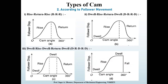In the second case — dwell-rise-return-dwell — there is a rise and return of the follower after dwell. This type is used more frequently than the rise-return-rise type. The third type, dwell-rise-dwell-return-dwell, is the most widely used. The dwelling of the cam is followed by rise and dwell, and subsequently by return and dwell. In the case where return of the follower is by a simple fall, the motion may be known as dwell-rise-dwell.